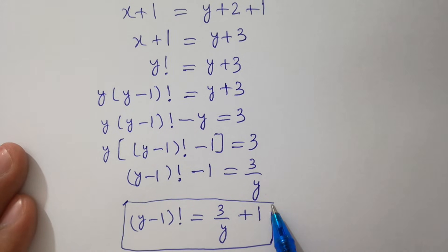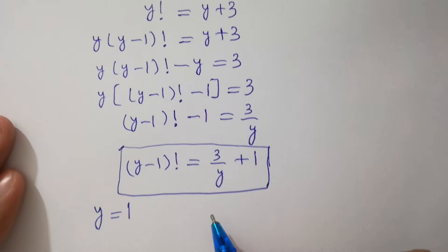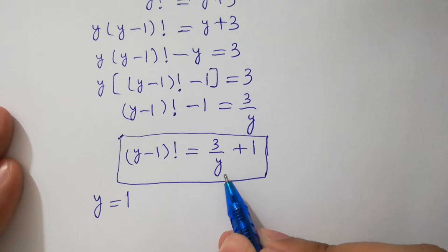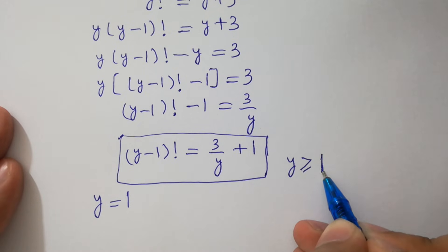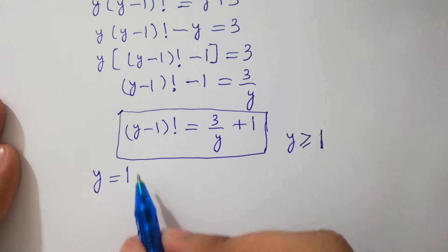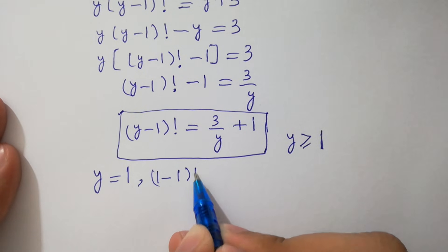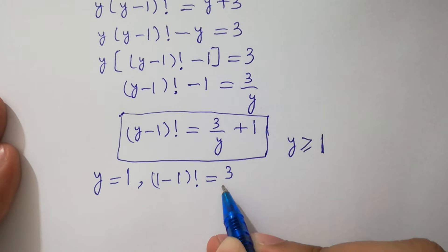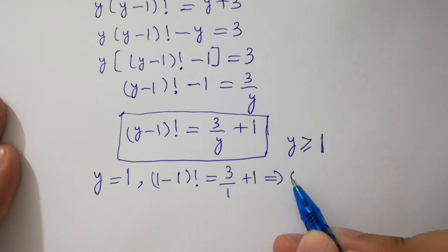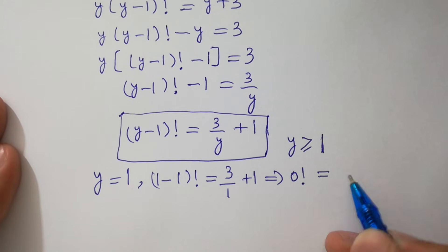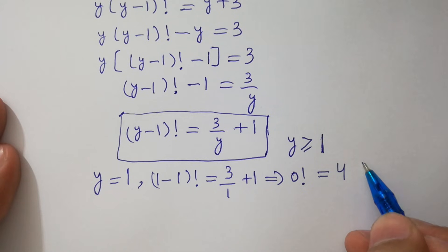Let's suppose y equals 1, so y must be greater than or equal to 1. If y equals 1: (1 minus 1) factorial equals 3 over 1 plus 1. That gives 0 factorial equals 3 plus 1 equals 4. But 0 factorial equals 1, and 1 does not equal 4. So y equals 1 is not possible.